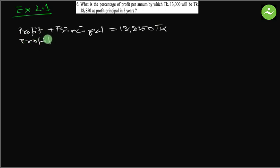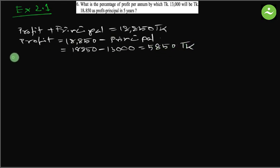Profit equals 18,850 minus principal. Placing the value of principal, that is 13,000, we can write equals 18,850 minus 13,000 equals 5,850 Taka. So this is profit.